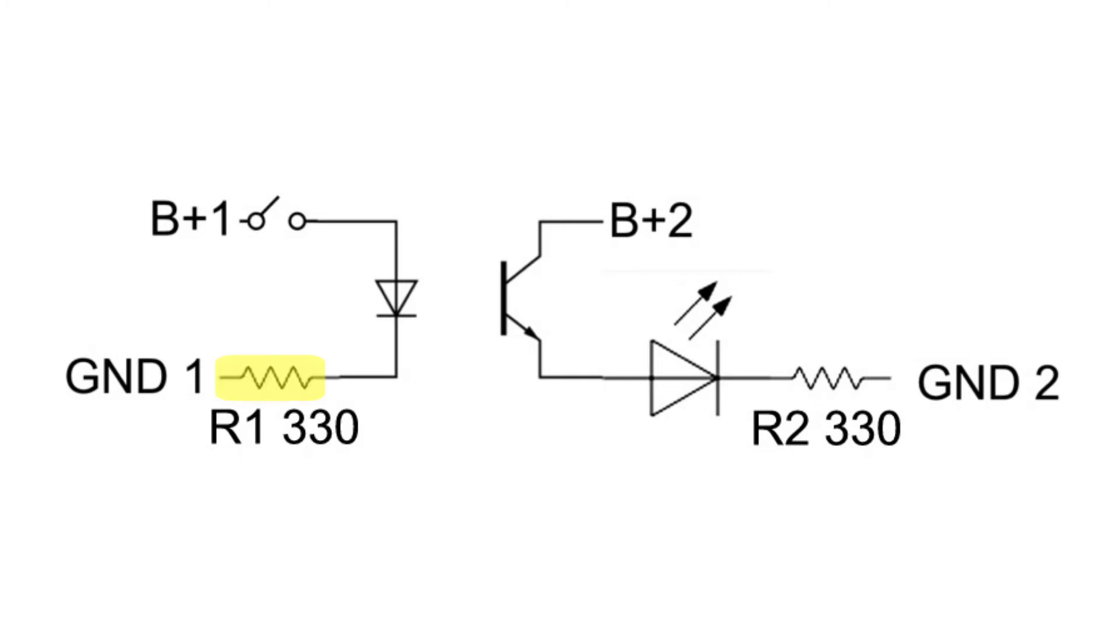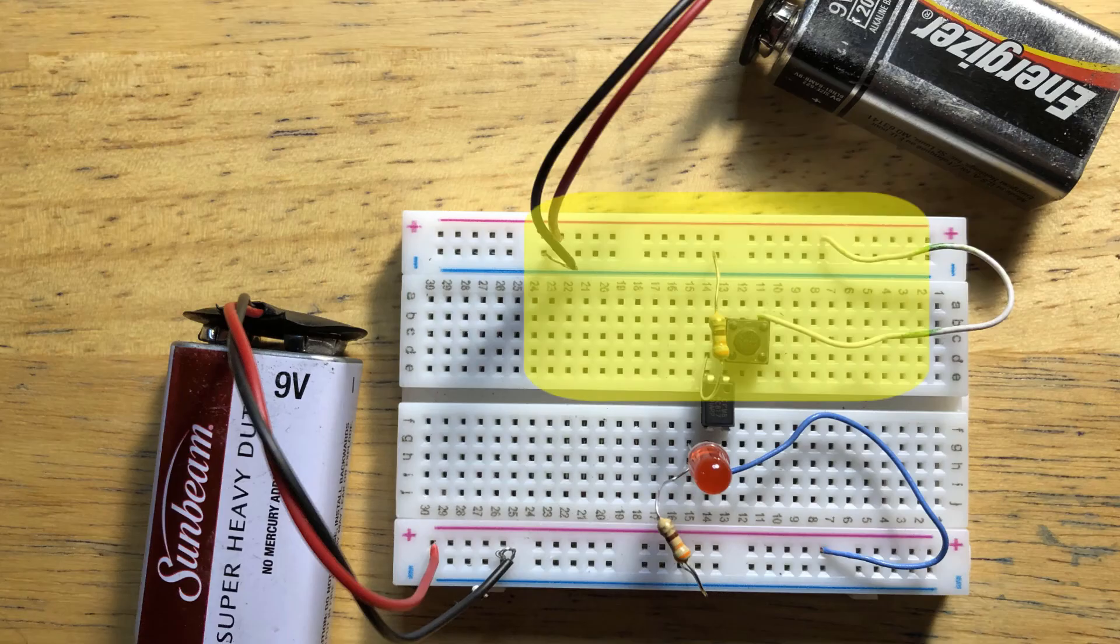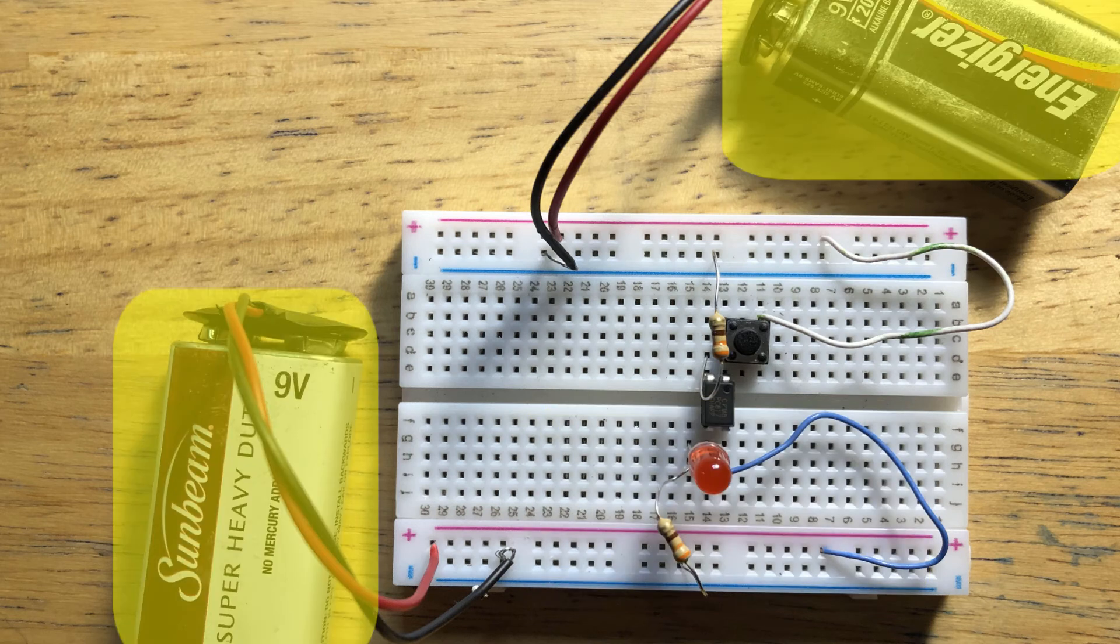R1 is the current limiting resistor for the LED in the optocoupler. R2 is the current limiting resistor for the LED attached to the photodiode in the optocoupler. The two parts of the circuit are powered by different batteries.